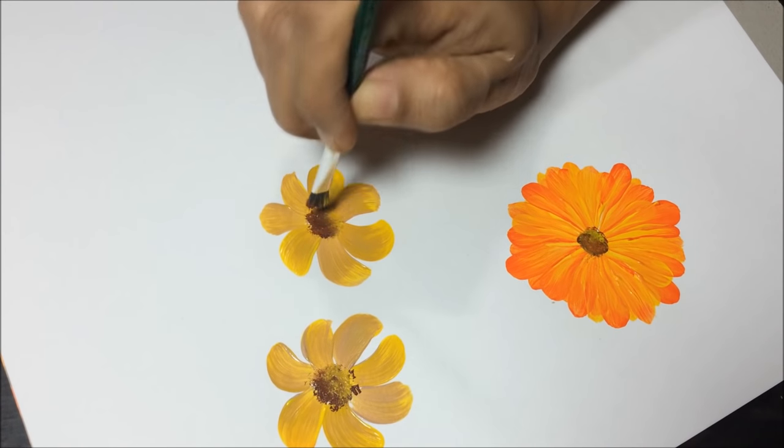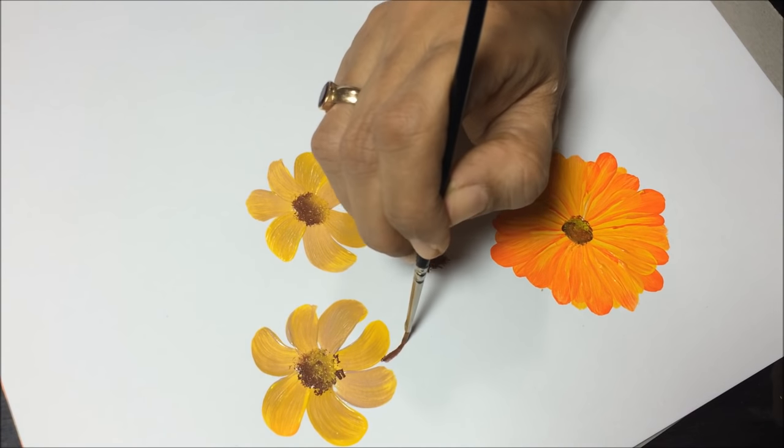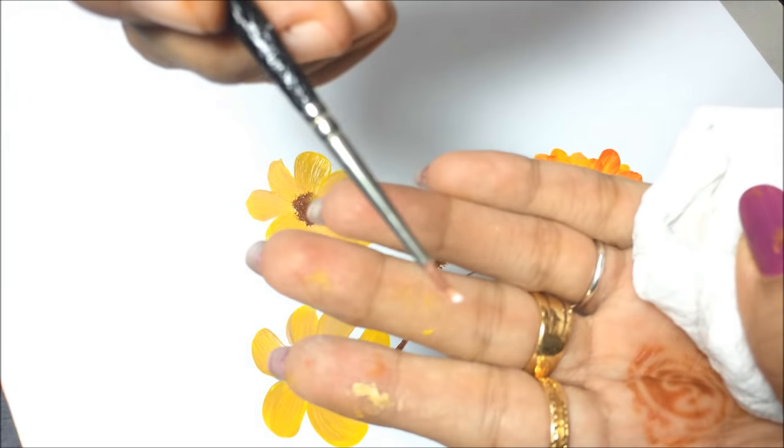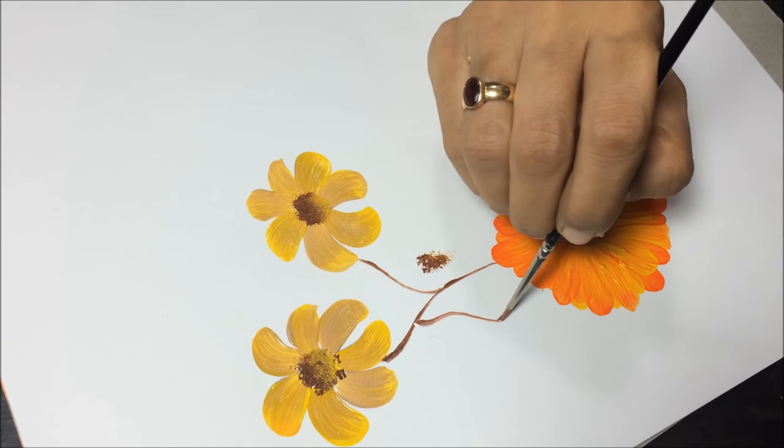To paint branches, I use liner brush and loaded it with two colors the same way I loaded the round brush. It's a very similar technique - one is a loading color and another is a tip color.